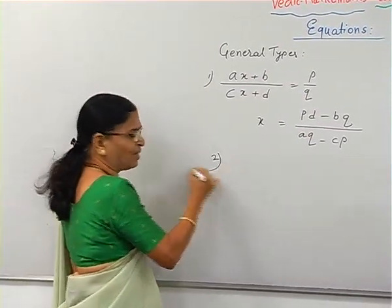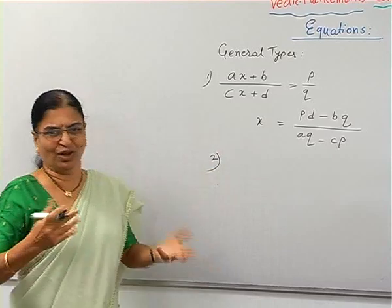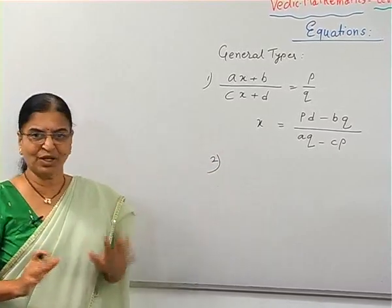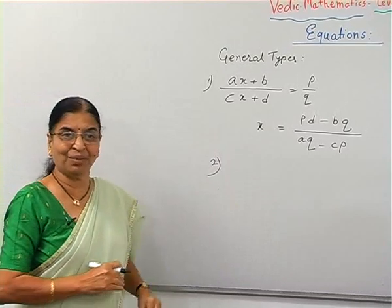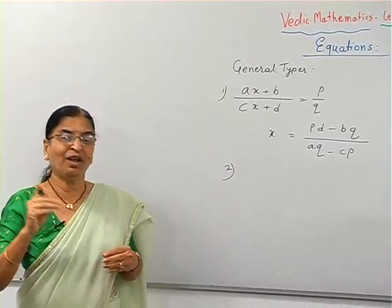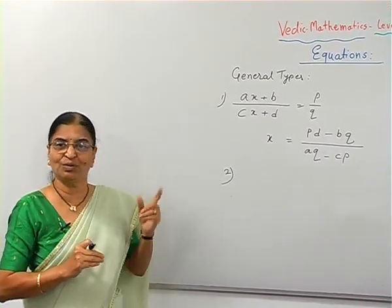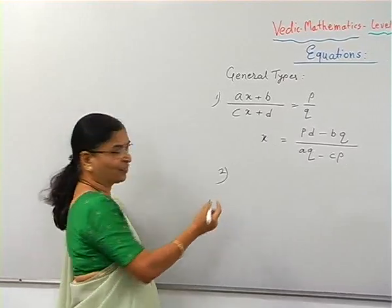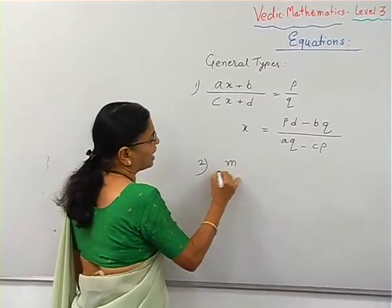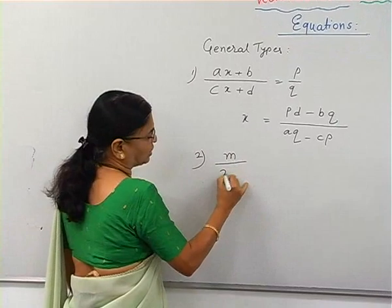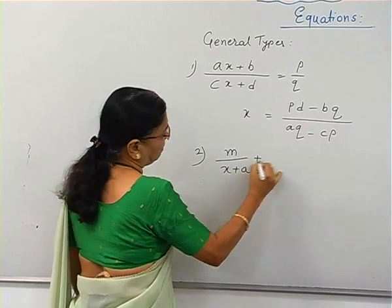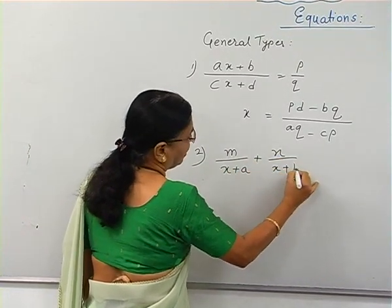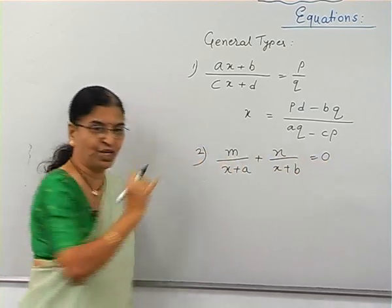This is a very simple type, so we will not discuss it further. The next type is also simple — we will see where we can use the different sutras of Vedic maths. Suppose we have M upon (X plus A) plus N upon (X plus B) equal to zero.